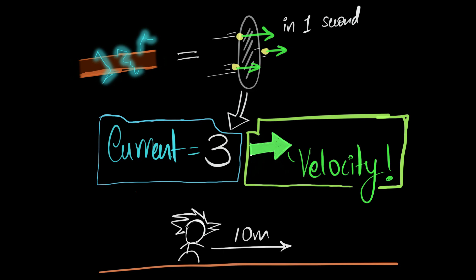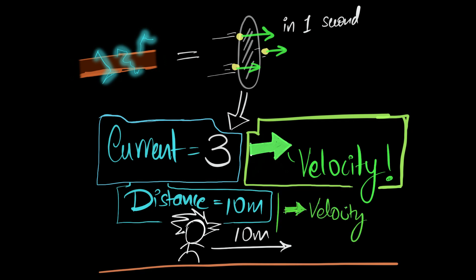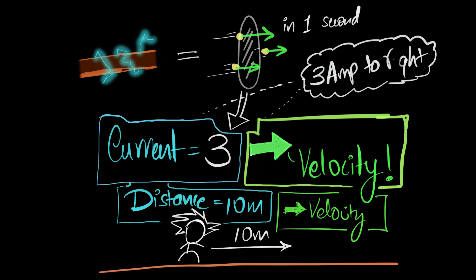It's kind of like saying, this man is traveling 10 meters distance to the right. Now, in this case, in this statement, the 10 meter distance is one quantity. It's a scalar. The right is not the direction of the distance. Distance does not have a direction. It's an additional information that I'm giving you, that the man also had a velocity vector, which is to the right. And so, just to keep it simple, we say, current is three amps to the right, but that right is not the direction of the current.